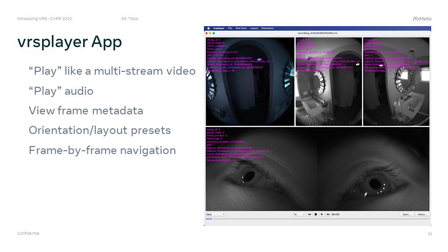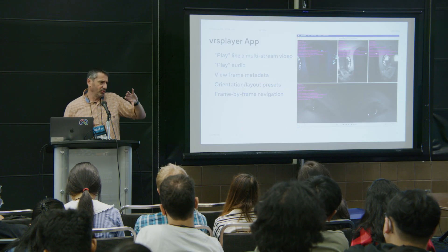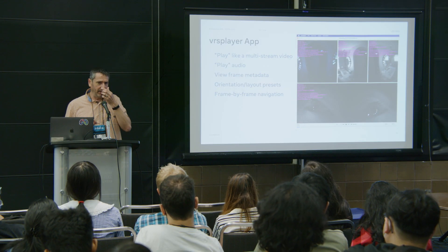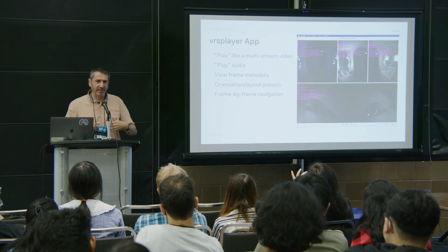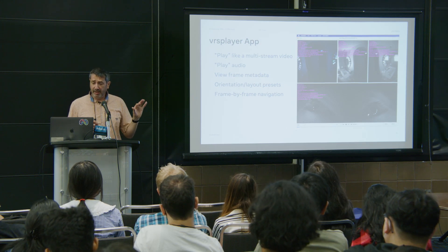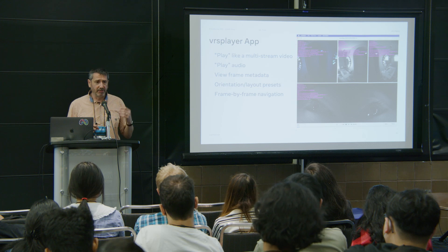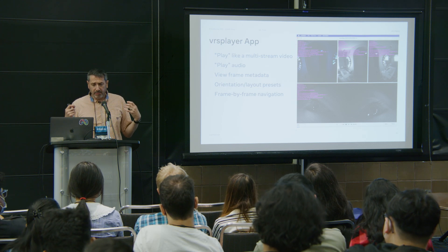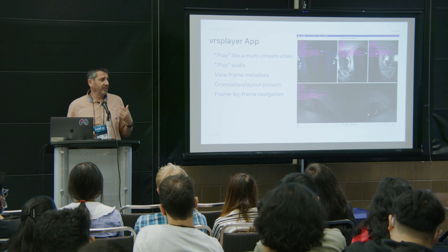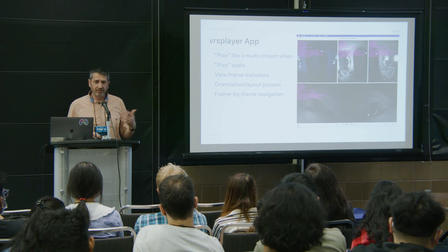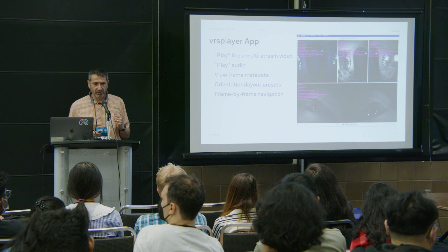Then comes the VRS player app. It allows you to play a VRS file much like any multi-stream video. It plays audio as well. You can see frame metadata on top of the image if you choose. It has functionality to change the orientation of images, reorder them, save presets, and play frame by frame or just play the video. It also allows you to save image data directly from the user interface — a very convenient way to get images out of your VRS file.